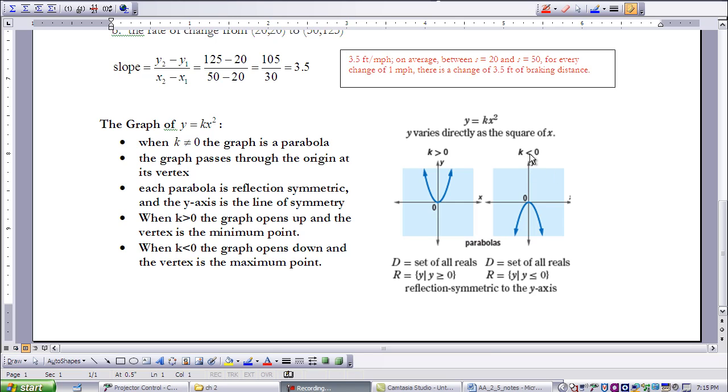Now, when we look at the graph when k is less than 0, once again, the domain is a set of all reals. There's nowhere that that graph is not going in a horizontal direction. But when we look at the range, everything's opening downward, so we know that it includes 0, but everything less than it also. So we say that the range is the set of values less than or equal to 0.